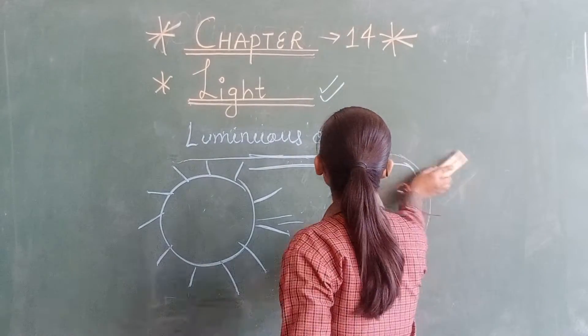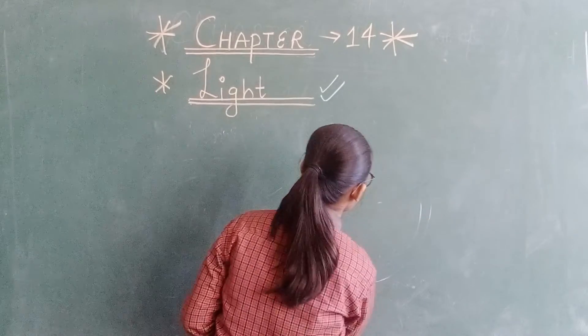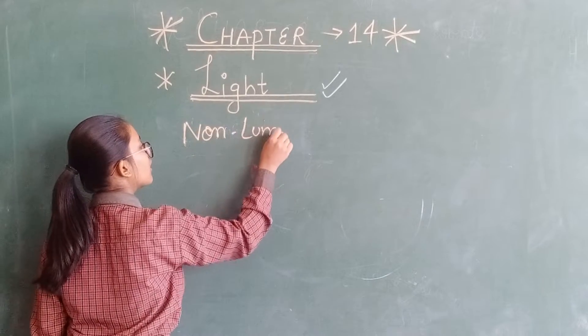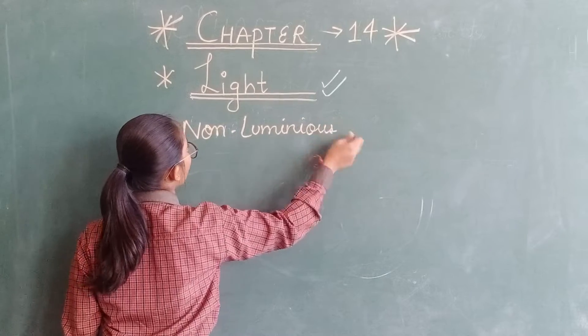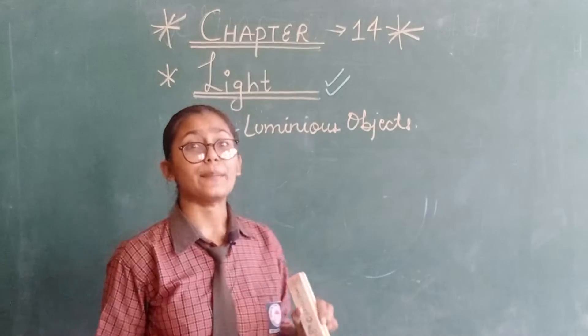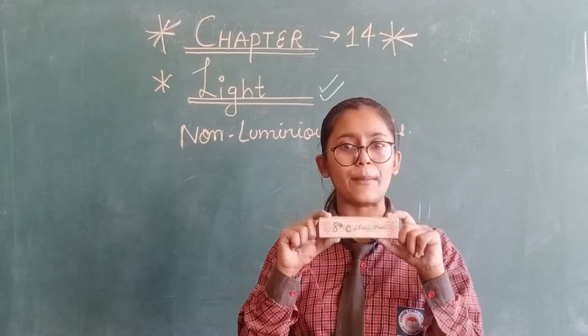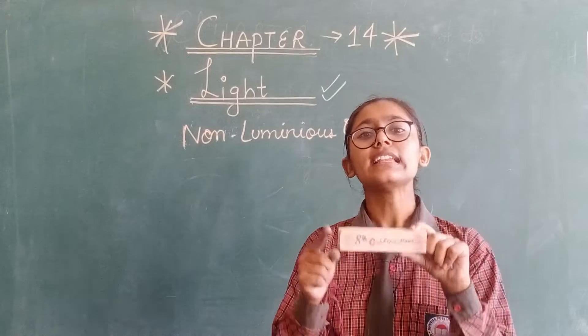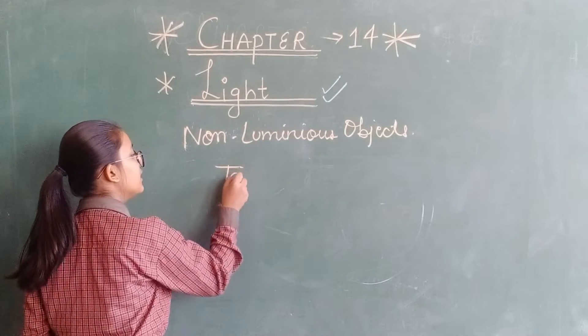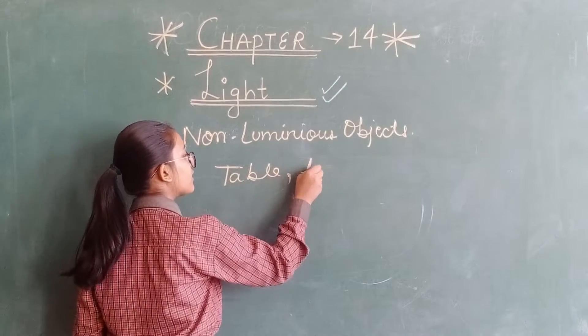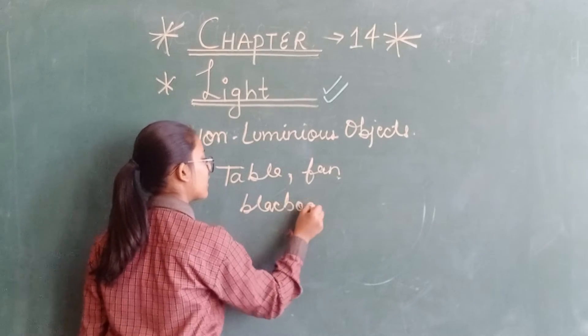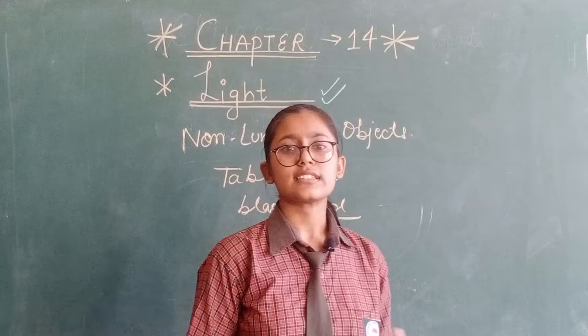Now, second one is non-luminous objects. What are non-luminous objects? Non-luminous objects don't emit light. Just like this duster. This duster is not emitting light, right? So it is a non-luminous object. And we can take so many examples more, just like table, fan, ordinary fan, blackboard, and so on. Have you got it?